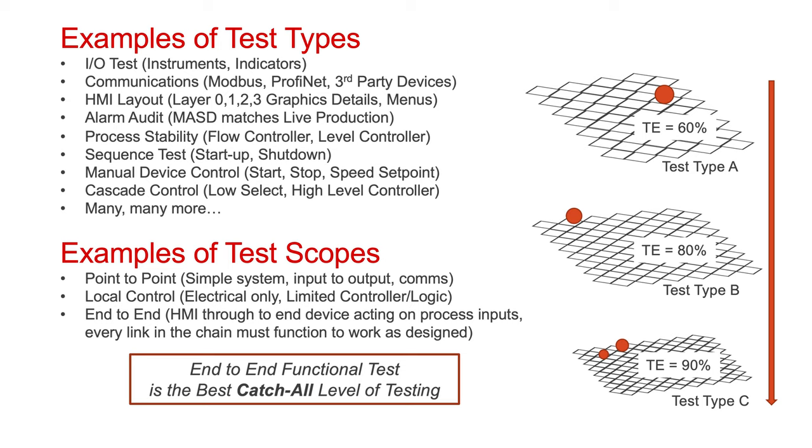Process stability is another example, for flow controllers and level controllers. Sequence tests are another example, whereby we have a startup sequence and a shutdown sequence, ensuring it starts up and shuts down through all the different combinations, and that the interlocks from step to step work correctly. There's also manual device controls — putting a device into manual and ensuring that it starts and stops, or if it's a variable speed or variable position device, that it proceeds to the set position or set speed. Cascade control tests, for example low select and high select, if there are multiple cascaded controllers fed into a controlled device, making sure that the low select is selecting correctly. But that's just a short list — there are many more.